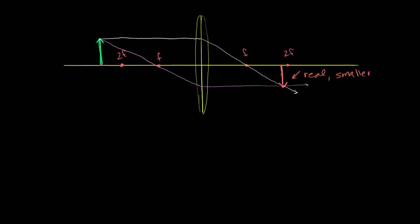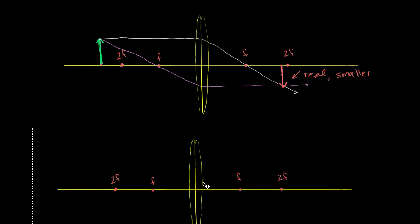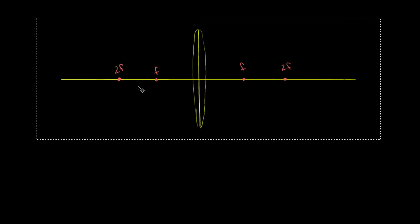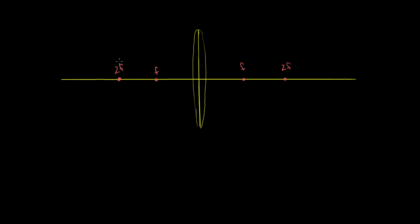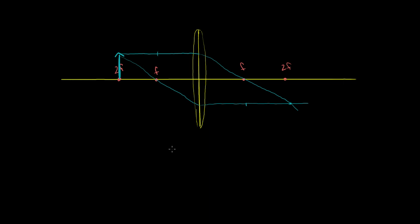Let's do a situation where the object is at two focal distances. We do the exact same thing — you might want to try it on paper for practice. We do one ray that is parallel, and when refracted it goes through the focal point on the other side. Then another ray goes through the focal point on the left side and comes out parallel. They converge right over there. You can see this forms a parallelogram — this distance is the same as that distance over here.